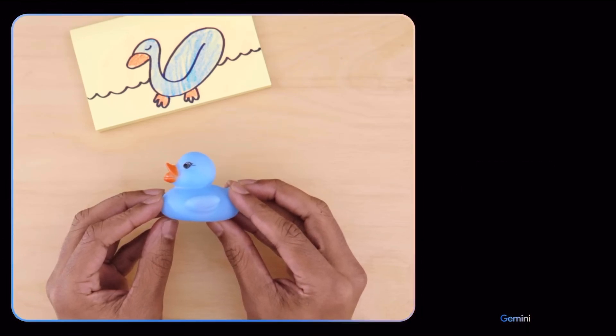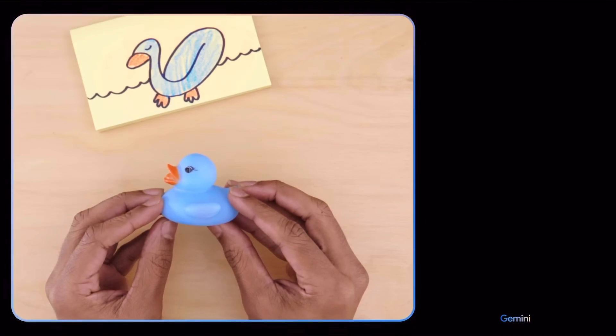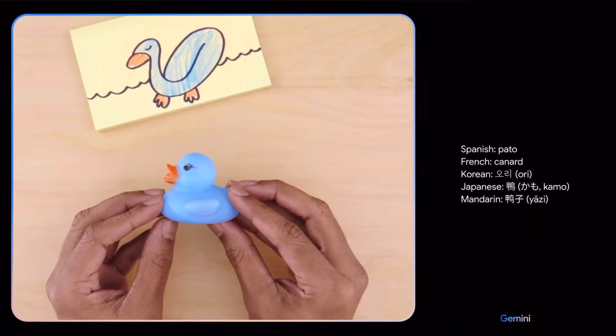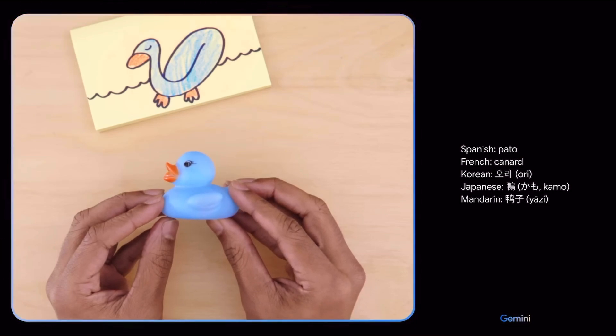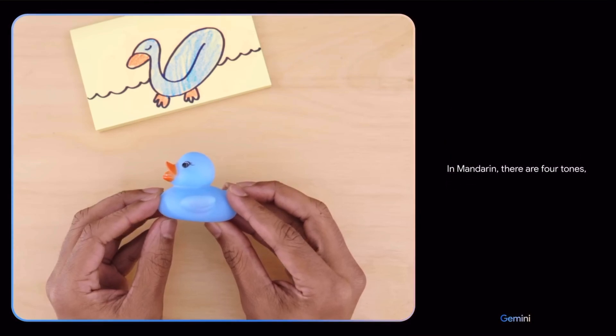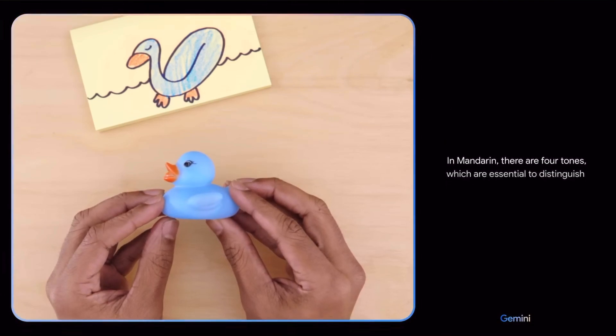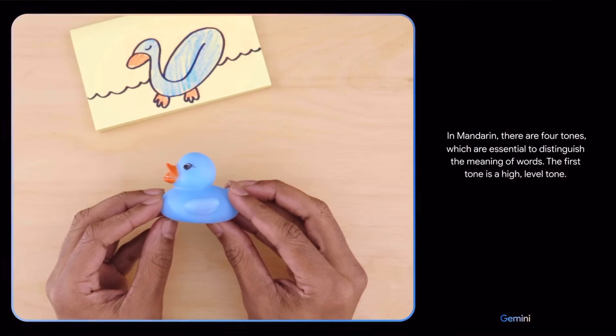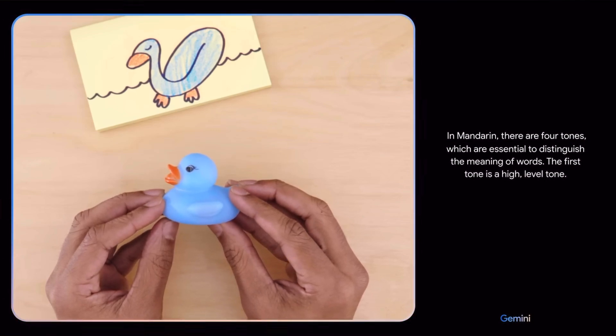Can you teach me how to say this in a different language? And give me a few options. Can you explain how to pronounce the Mandarin one? Is it Ya-a-tsu? Ya-a-tsu is pronounced with a first tone. In Mandarin, there are four tones, which are essential to distinguish the meaning of words. The first tone is a high, level tone. Oh, okay.